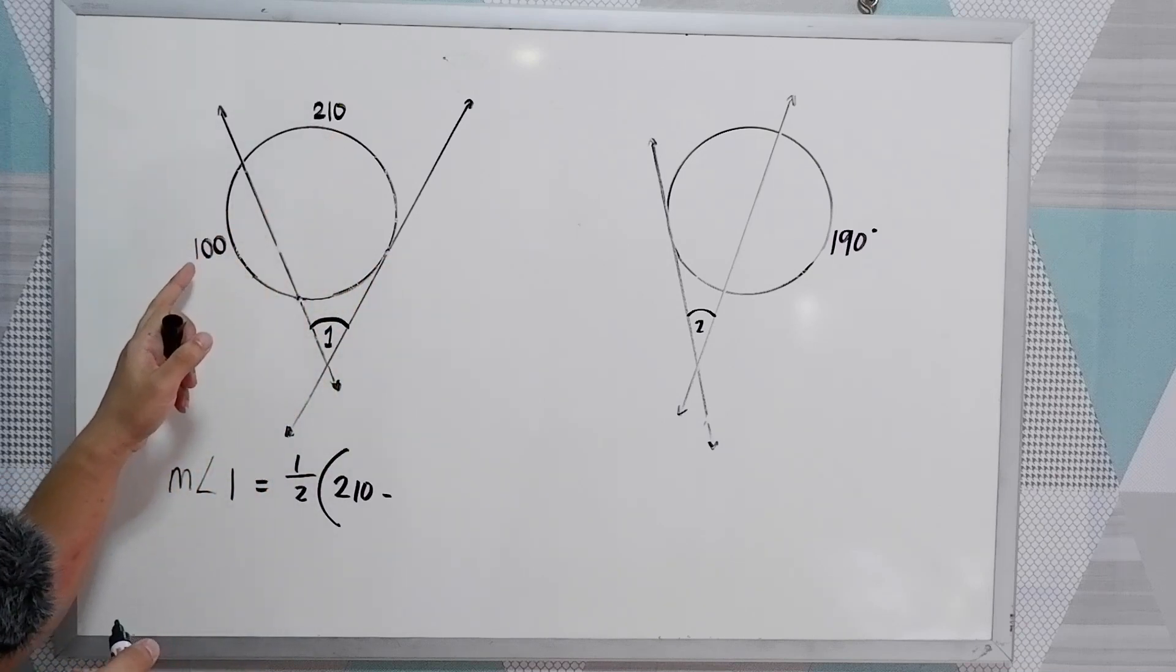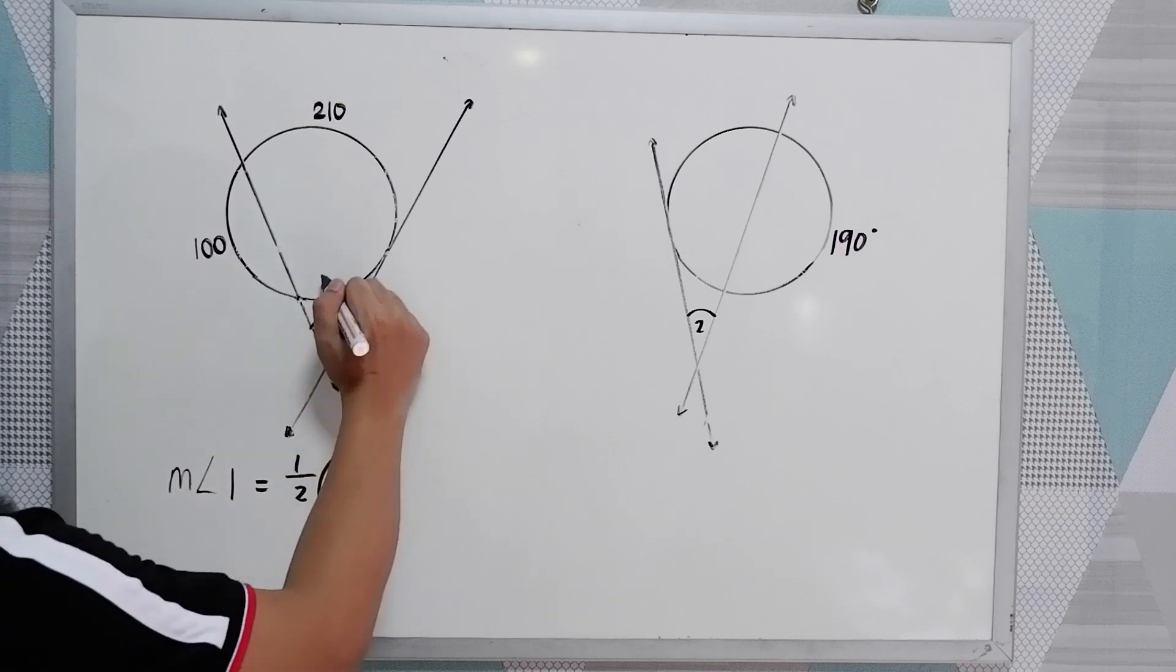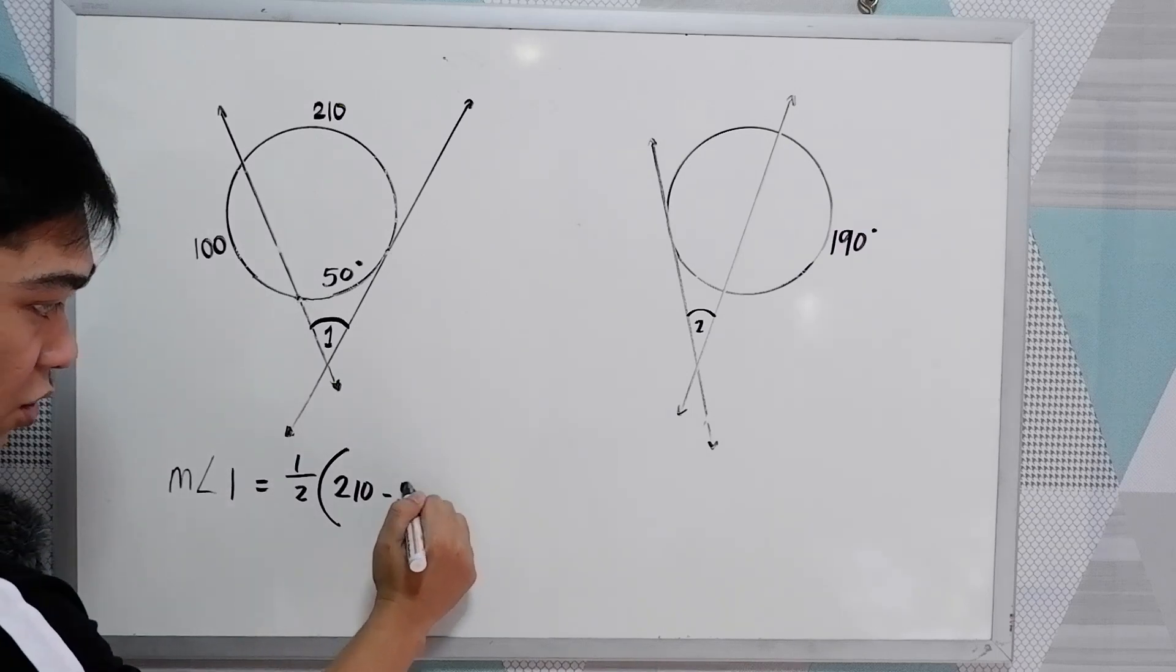So 210 plus 100, that is 310. So we have here 50 degrees. Why 50? Because one revolution is equal to 360. So 50.